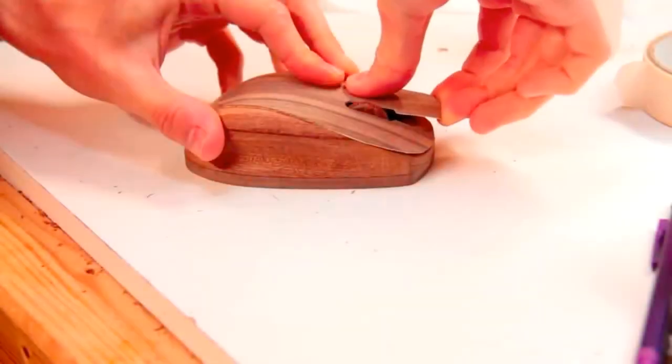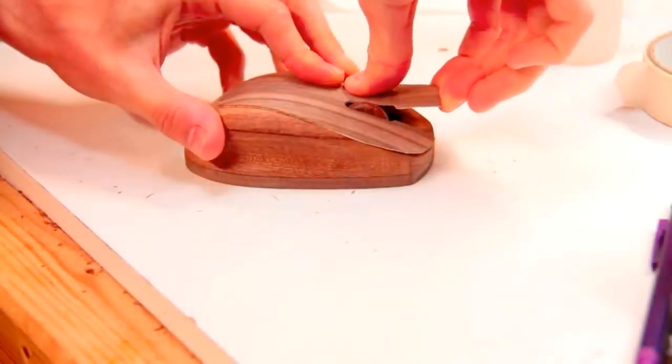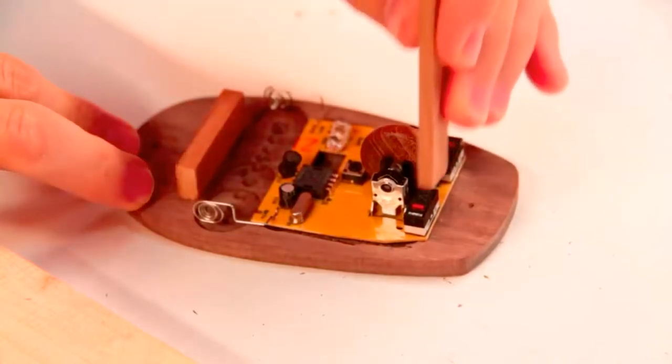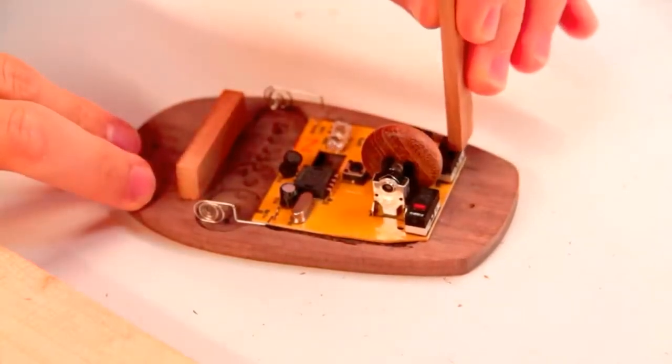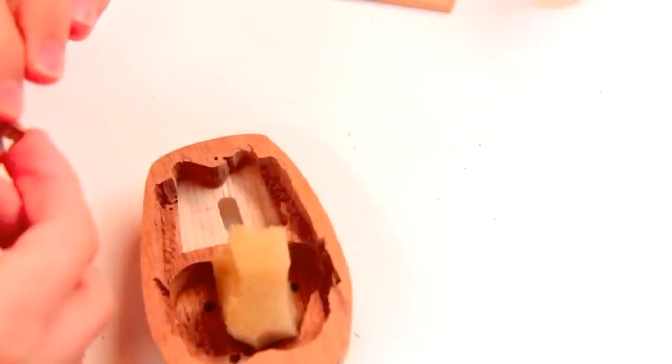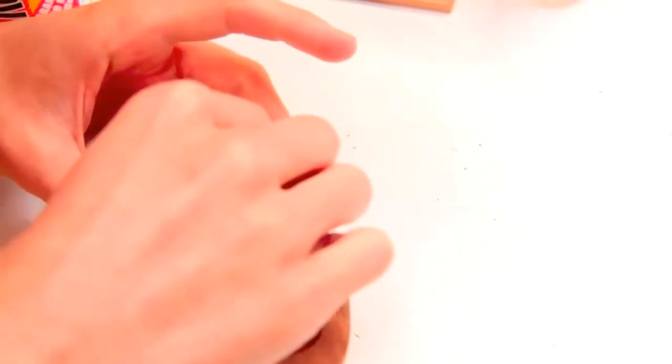With the glue dry, I'm bending back the veneer to give me about a millimeter of clicking travel. And I'll glue on some tiny pieces of wood to engage with those buttons.